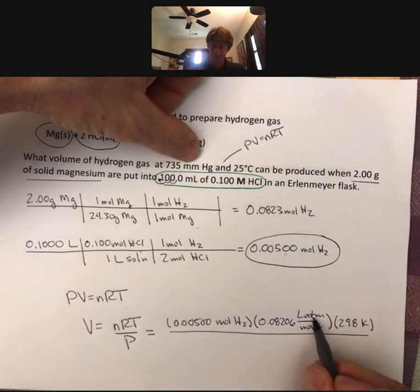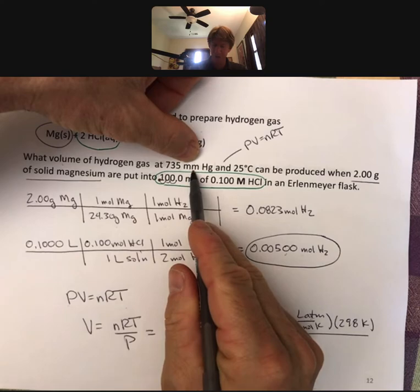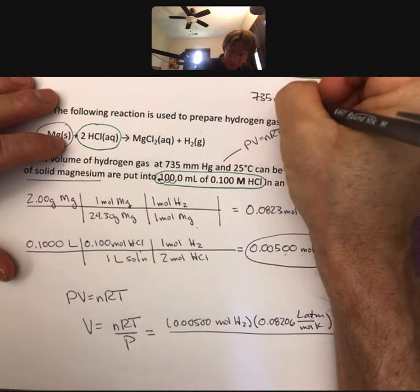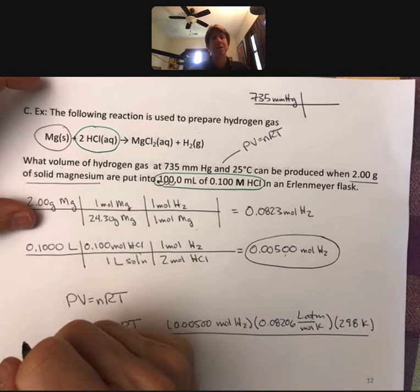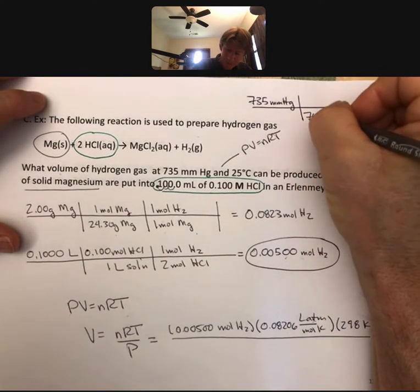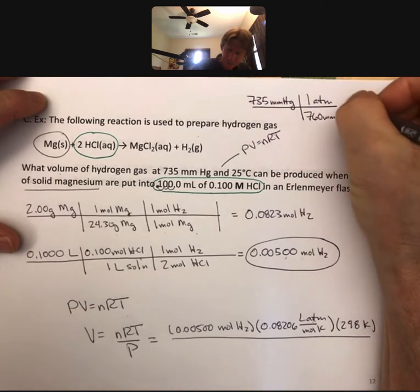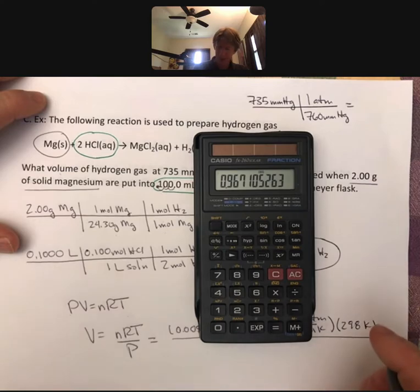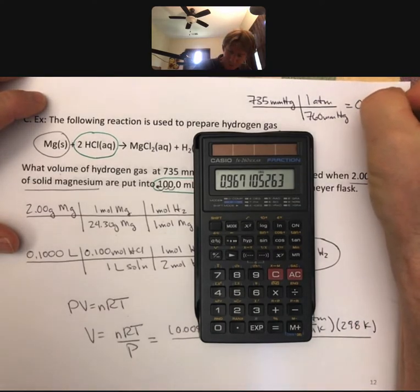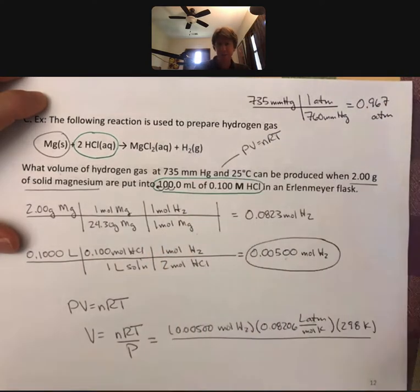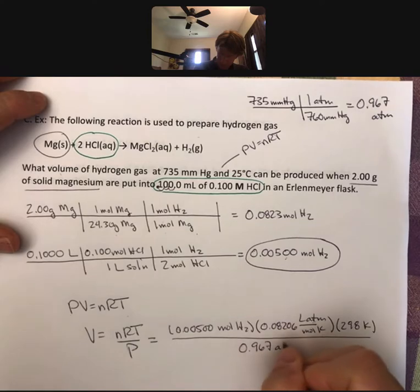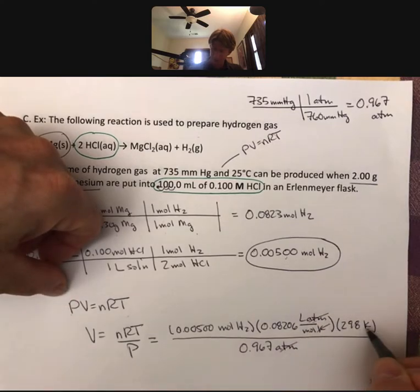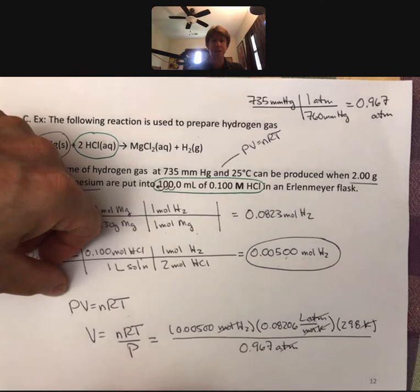It says atmospheres here, so we have to convert our 735 millimeters of mercury into atmospheres. If you'll remember, 760 millimeters of mercury is 1 atmosphere. I get 0.967 atmospheres, which I can then plug in. And my answer is going to be in liters, because my atmospheres cancel, my kelvin cancels, and my moles cancel, leaving me with liters.